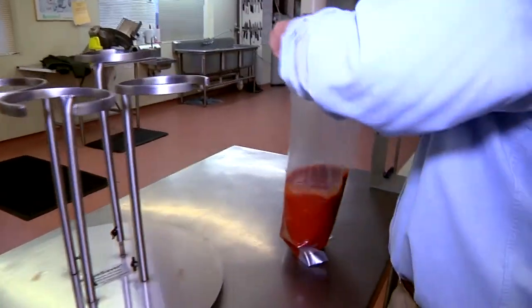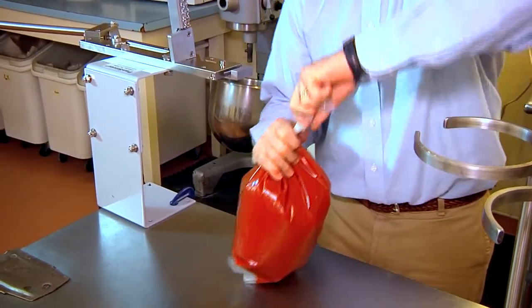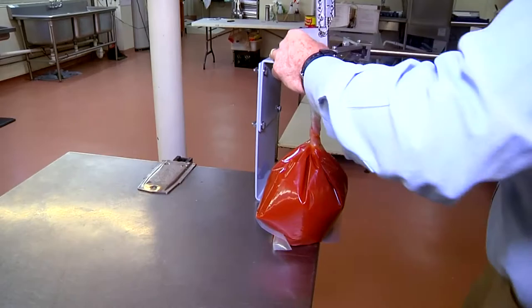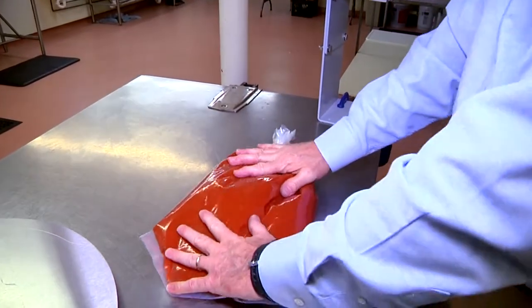Before clipping, eliminate as much air as possible from the casing by twisting the bag, then clip near the top of the open end. Casings should not be packed firmly. The food should be able to move freely inside the casing.